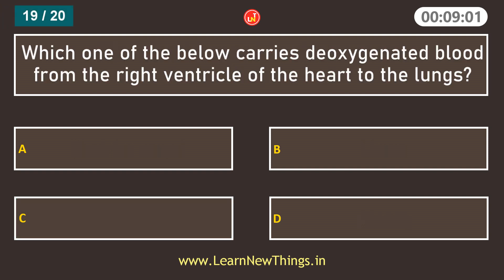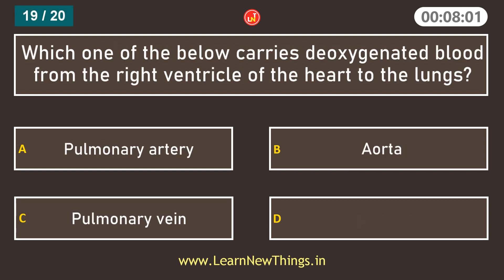Which one of the below carries deoxygenated blood from the right ventricle of the heart to the lungs? Pulmonary artery.